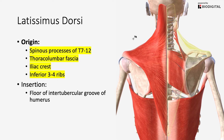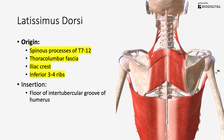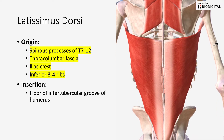The next muscle we're going to go over is your latissimus dorsi. If we take away the trapezius muscle, you're going to see that in that inferior portion, your trapezius sits over your latissimus dorsi. So if we hide that, you are going to see your latissimus dorsi.